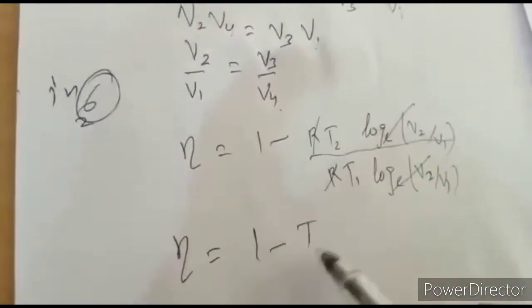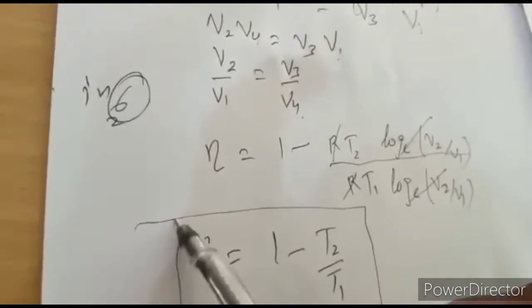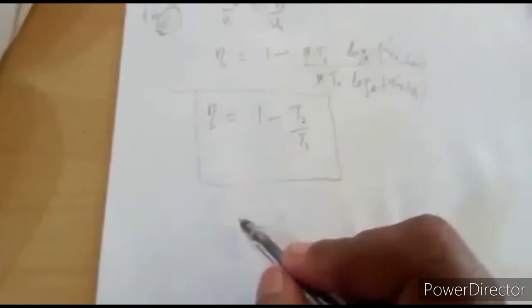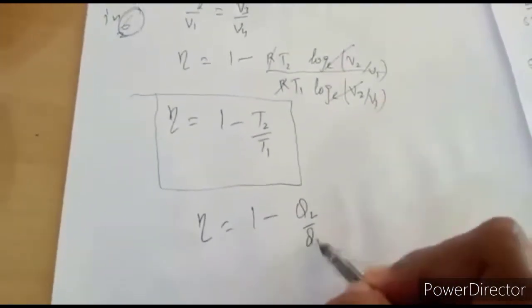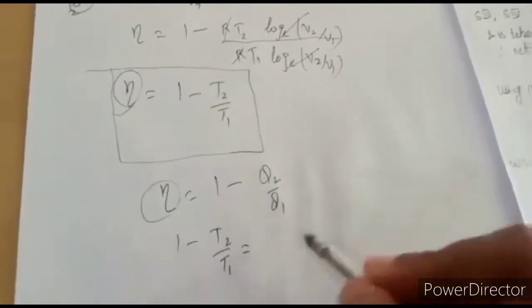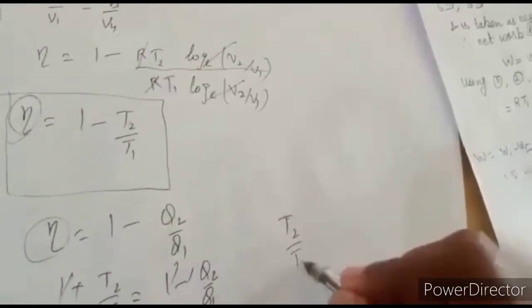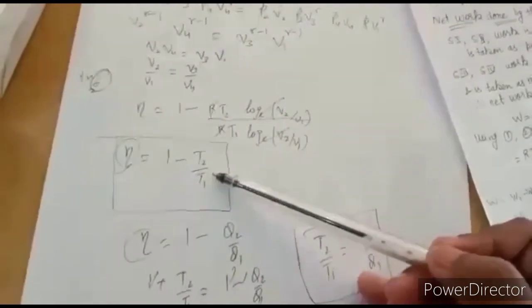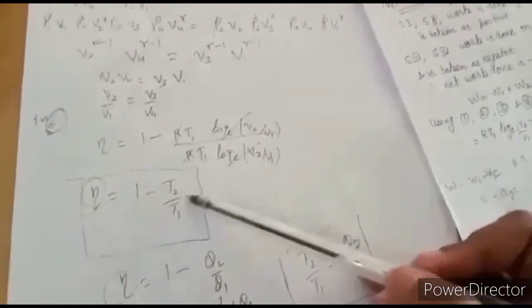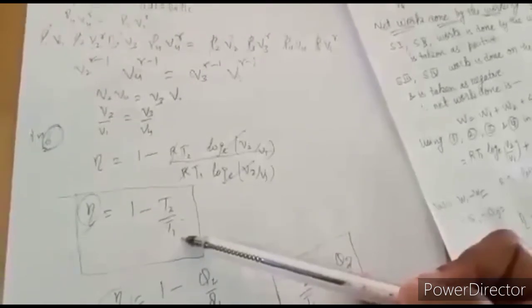This is the efficiency of the Carnot engine in terms of temperature. Equating both expressions: 1 − T2/T1 = 1 − Q2/Q1, which gives T2/T1 = Q2/Q1. The efficiency can never be 100% because that would require T2 = 0 and T1 = infinite — both conditions are impossible. So there will always be some energy loss. Thank you.